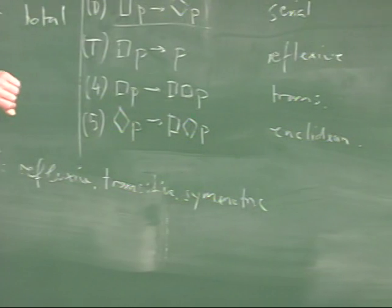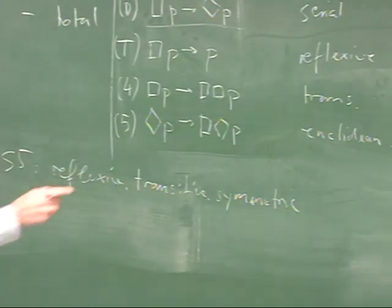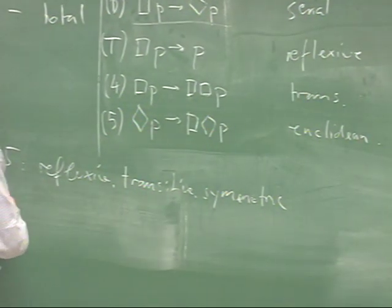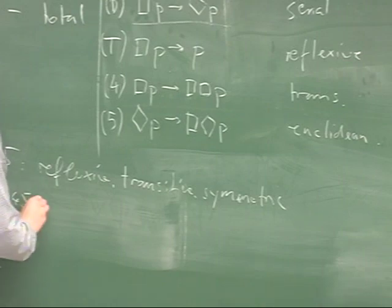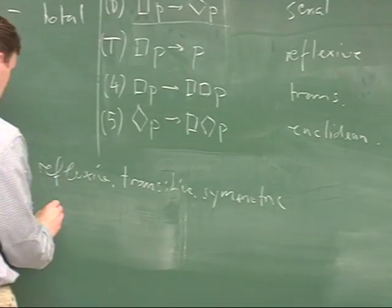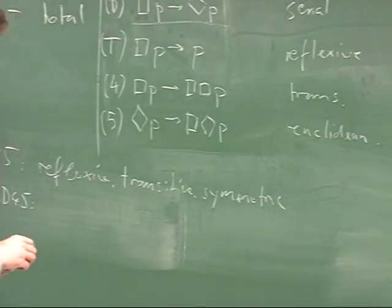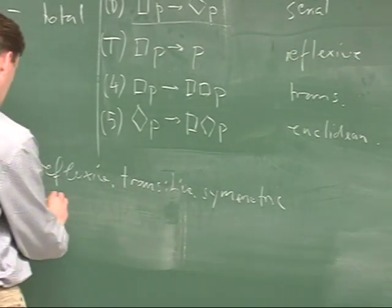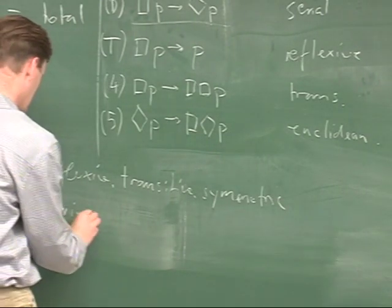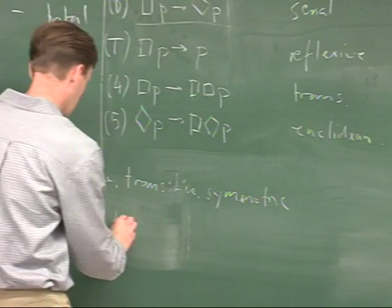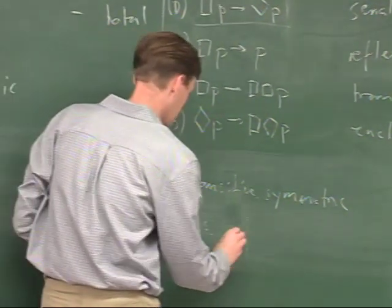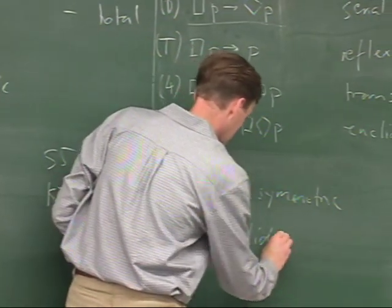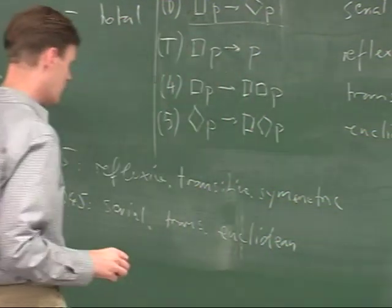So S5 gives us reflexive, transitive, and symmetric relations, while KD45 gives us the serial, transitive, and Euclidean relations.